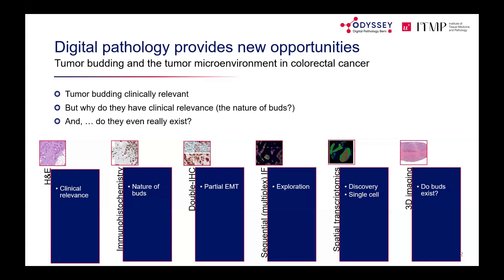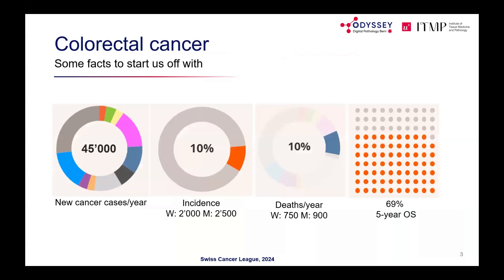The technological journey starts with H&E stain and progresses through single stains, double stains, immunofluorescence, spatial transcriptomics, spatial multiplexing, and finally 3D imaging.